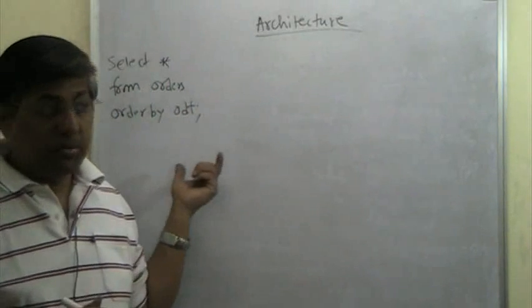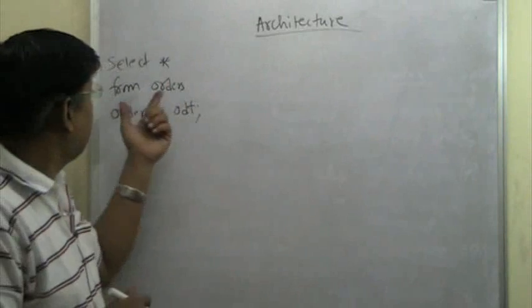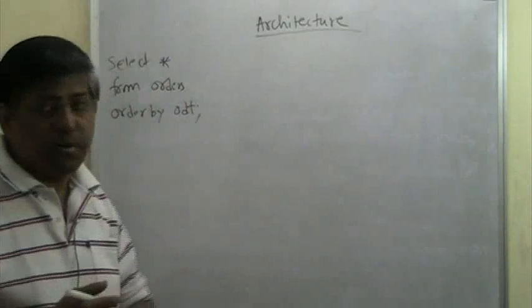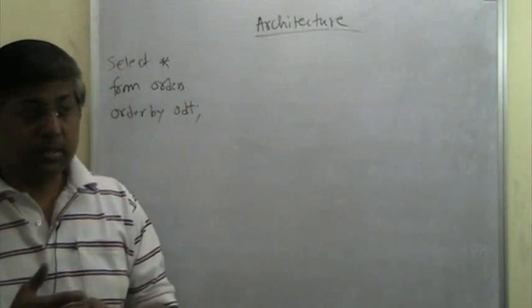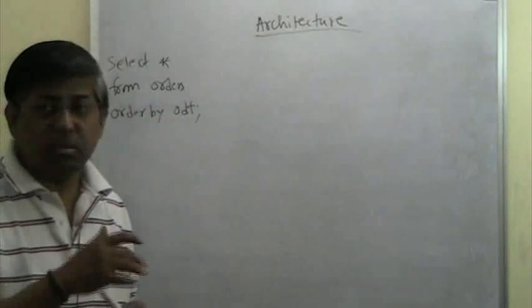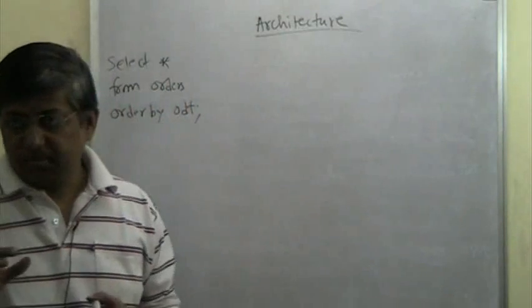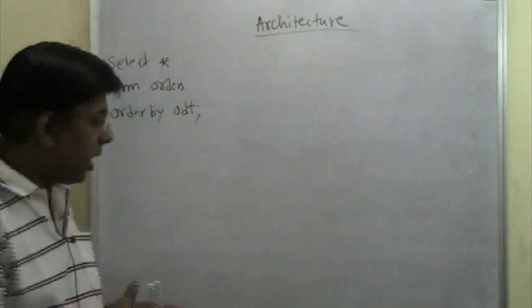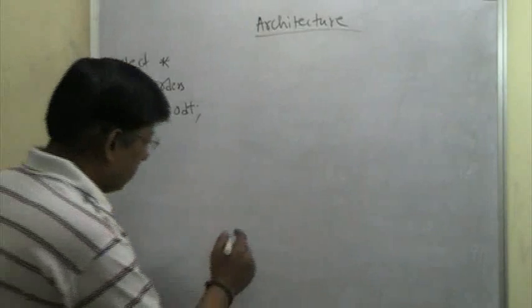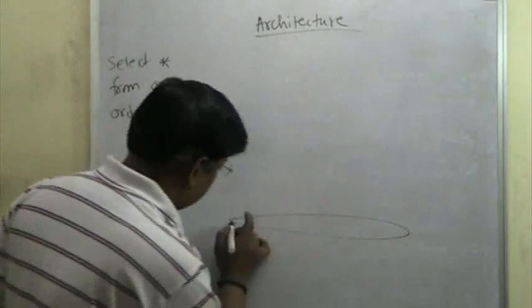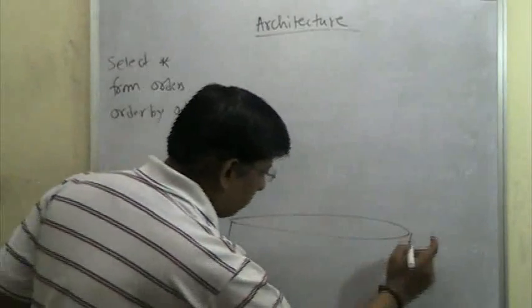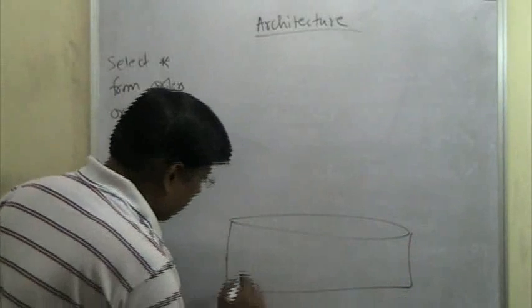We know that the data for the orders table is sitting somewhere in some tablespace. It is on the hard disk. So this is what we have already understood — this is the hard disk.